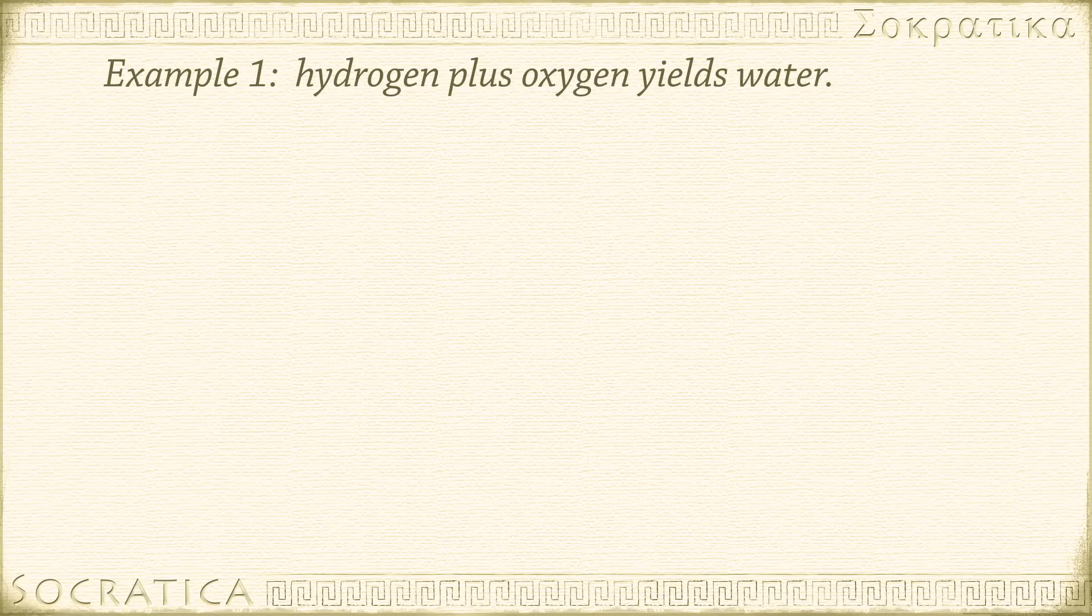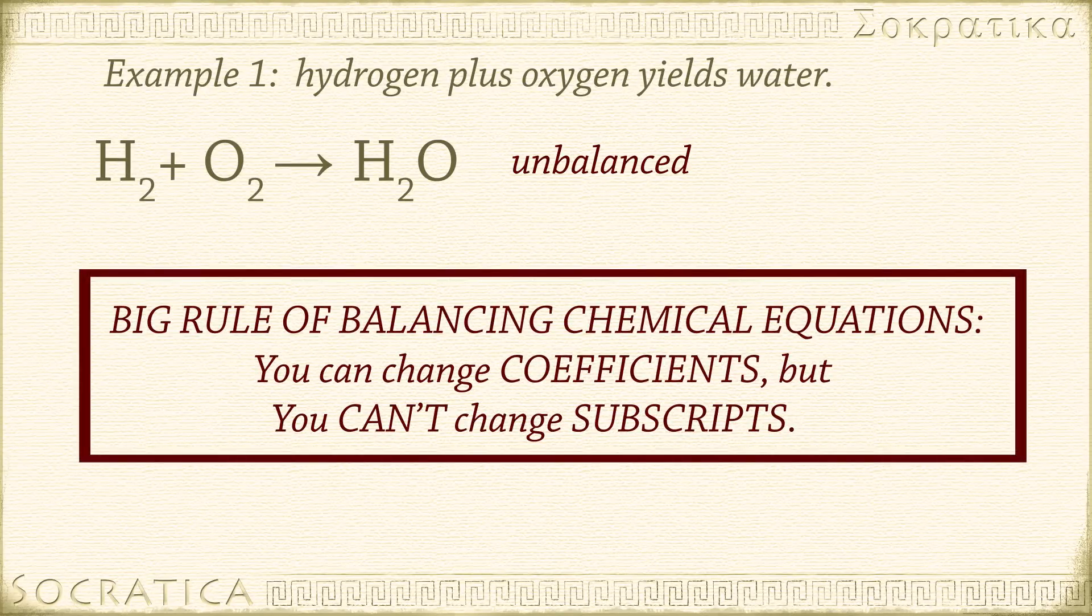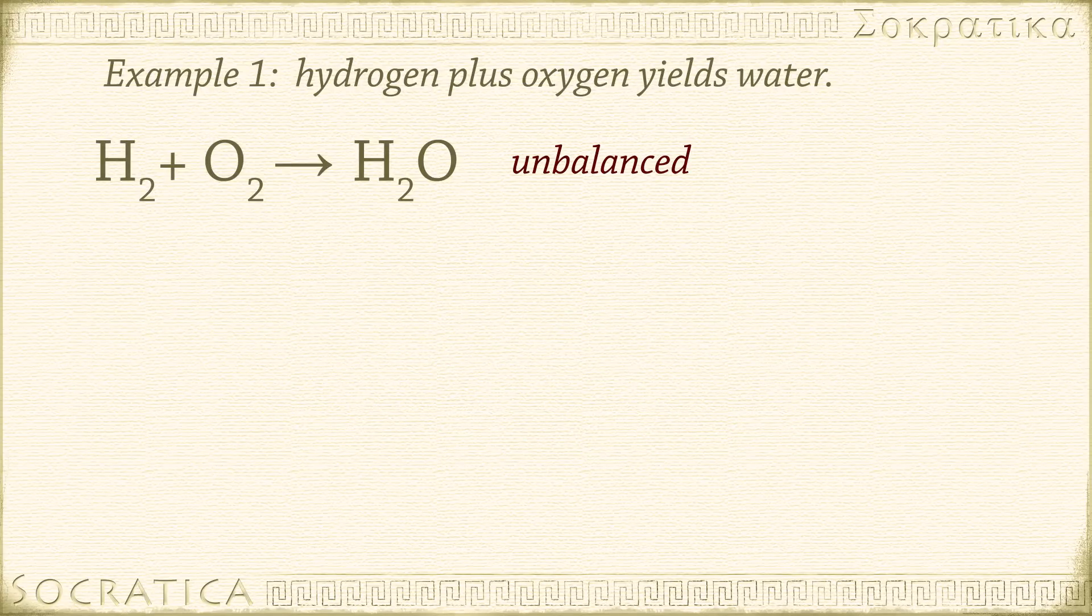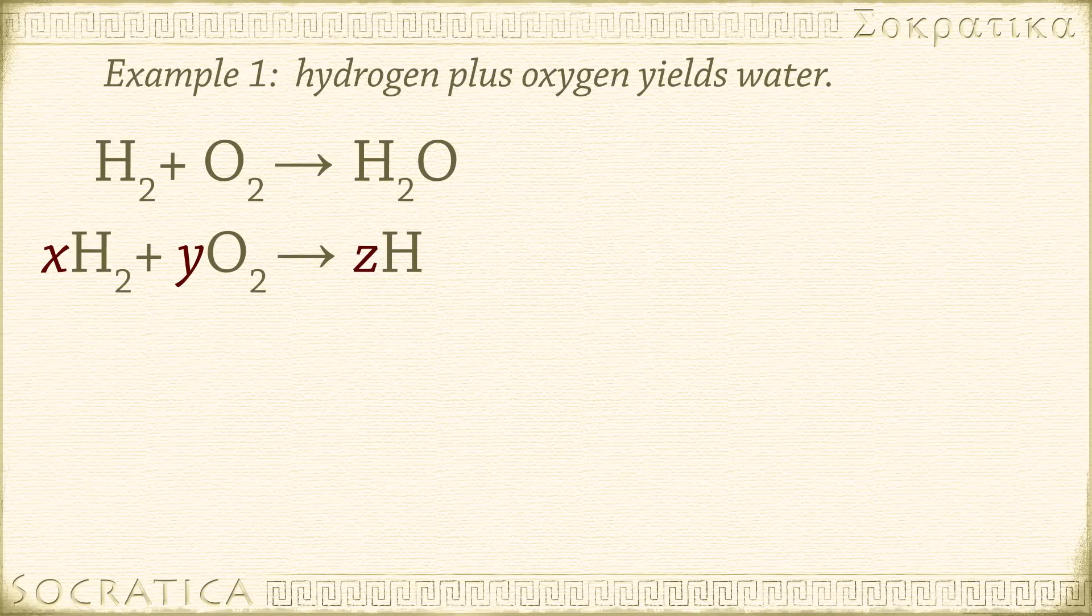Here's our first example. Hydrogen plus oxygen yields water. Remember, hydrogen and oxygen are both diatomic molecules. H2 plus O2 yields H2O. This is an unbalanced chemical equation. To balance it, we'll have to place coefficients in front of the hydrogen, oxygen, or water molecules. Remember, we can't change any subscripts. Now, we don't know what those coefficients are, so let's write them as variables. X, Y, and Z. XH2 plus YO2 yields ZH2O.